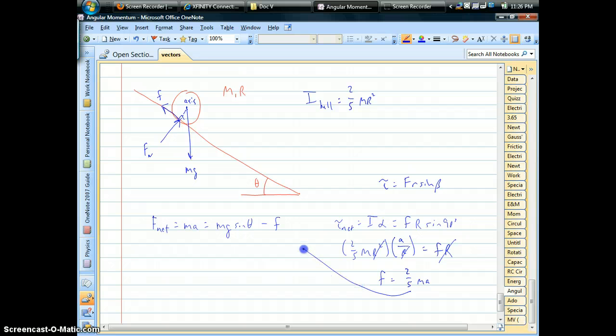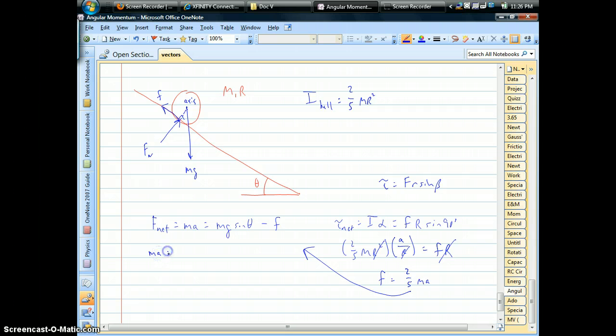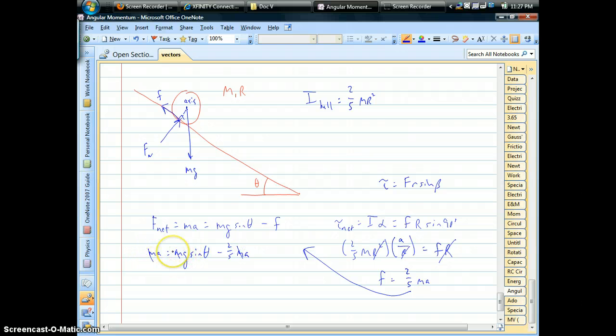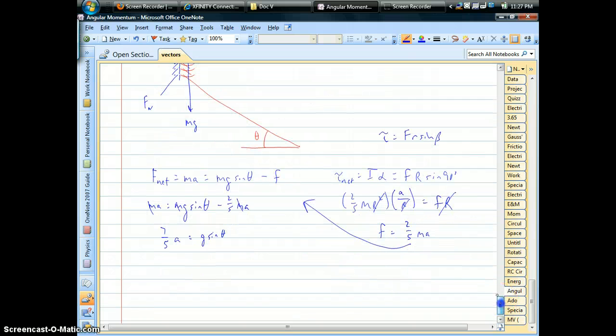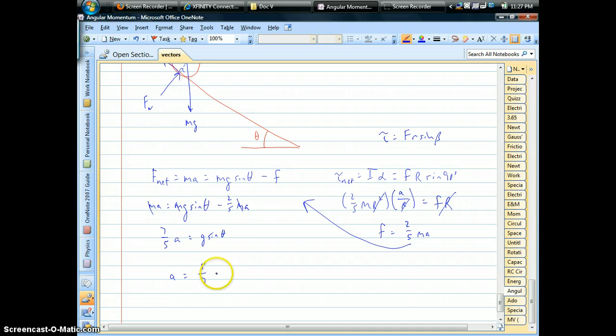So we have this connection between friction and acceleration. And we can substitute this into the force equation. So that's going to look like something like this. And the mass drops out. We can collect the accelerations together. Moving that negative 2 fifths over. So we're going to have 7 fifths of the acceleration. And it's g sine theta. And last but not least, the linear acceleration is going to be 5 sevenths g sine theta.